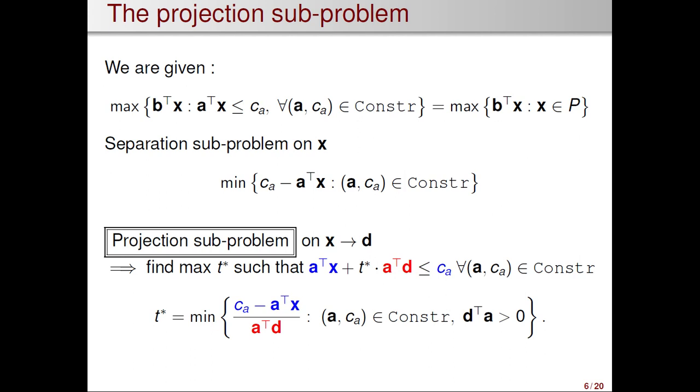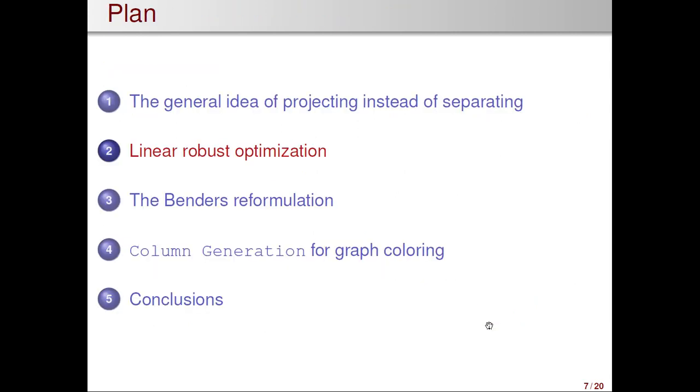So, when we minimize this ratio, we need to minimize it only over the constraints a that satisfy this condition. This algorithm was implemented on several problems. I may refer you to a paper called Projective Cutting Planes in SIAM Journal of Optimization or a paper called Further Experiments on Projective Cutting Planes. But for today, I will discuss the column generation model for graph coloring, the fourth section.